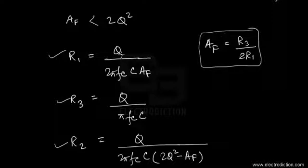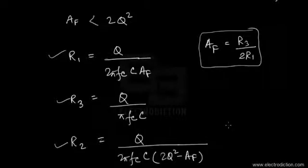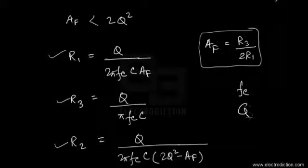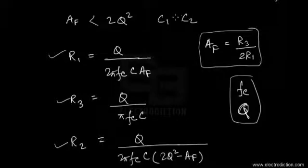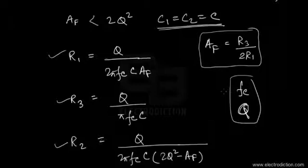One important point: in order to design this circuit, it is very essential that we know the value of the center frequency and the quality factor beforehand. Only then can we apply these relationships to get the necessary values of R1, R3, and R2, and then choose a value for the capacitors C1 and C2 such that both have the same value C. Given that we know the center frequency and the quality factor, only then can we basically design this circuit.